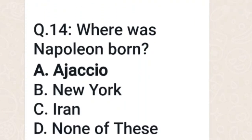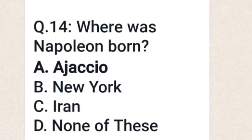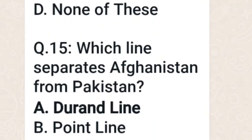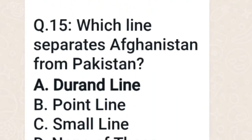Where was Napoleon born? Ajaccio. Which line separates Afghanistan from Pakistan? The Durand Line. World War II began on 3 September 1939.